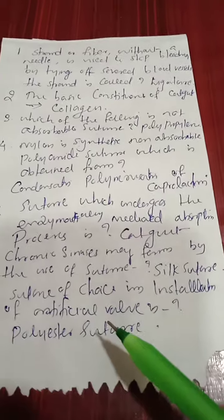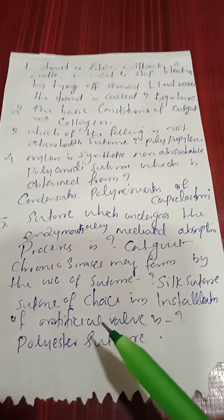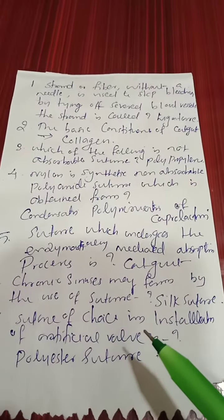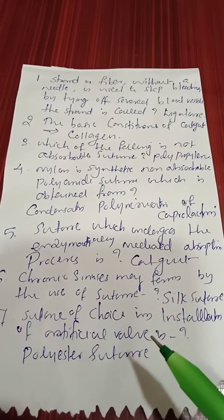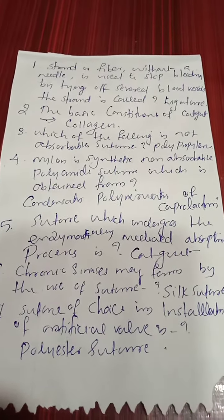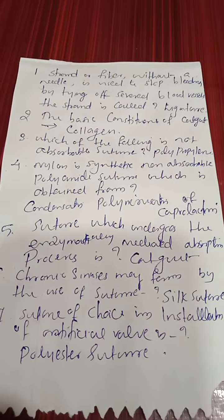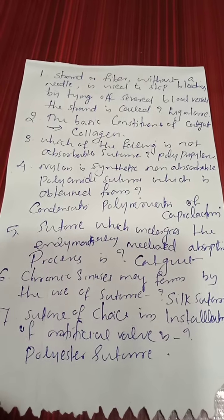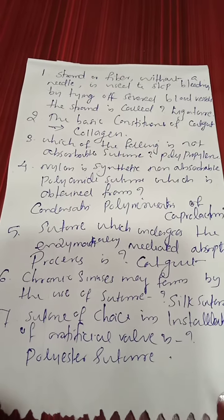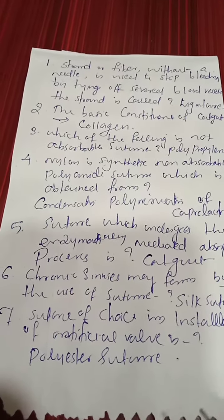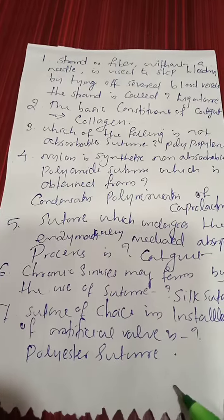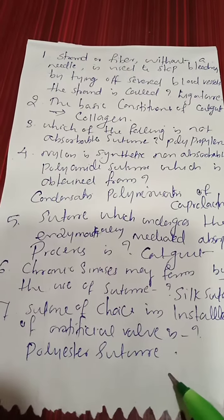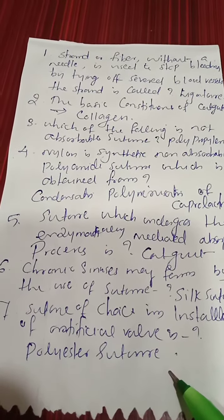The suture of choice for installation of an artificial valve is a polyester suture.